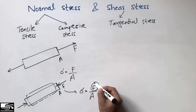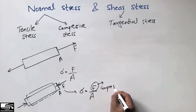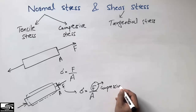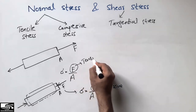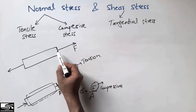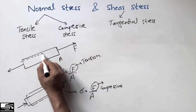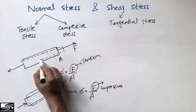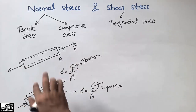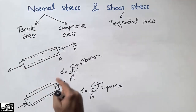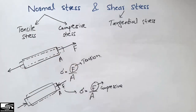Compressive stress is represented by the same formula — force divided by area — but in this case the force is a compressive force, while in the tensile case the force is a tension force, because it creates tension in the body and stretches it. These are the two types of normal stresses, in which the force acts normal to the surface area.